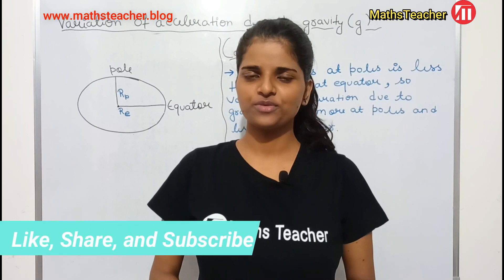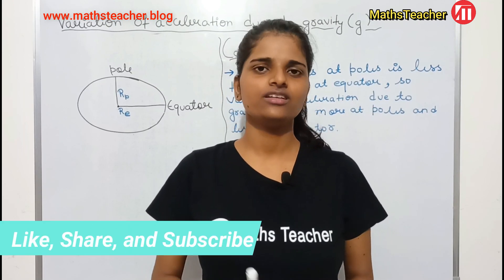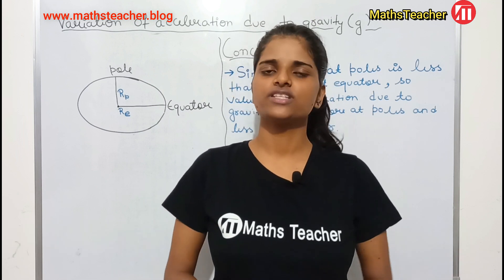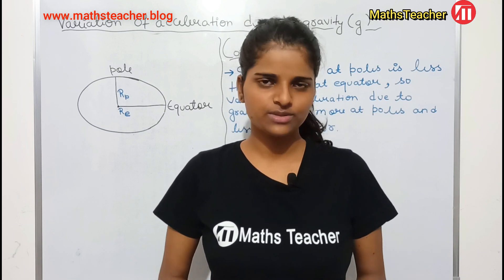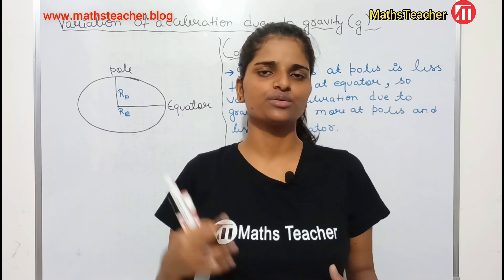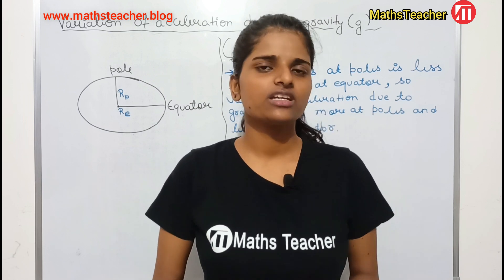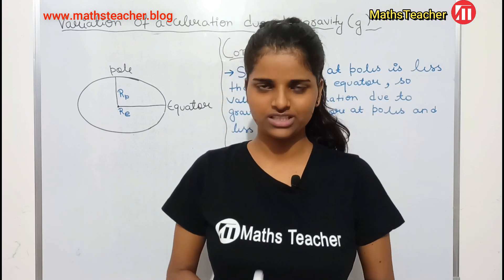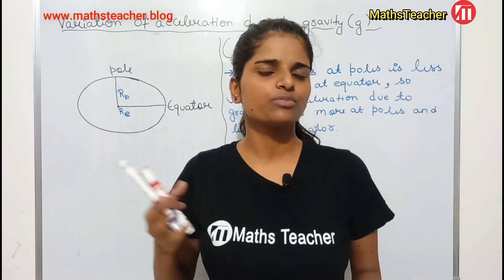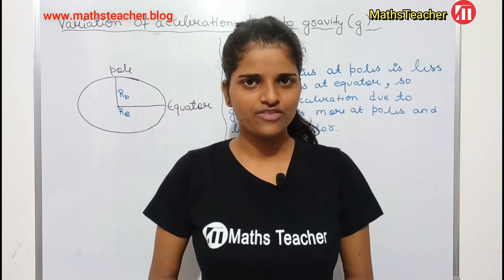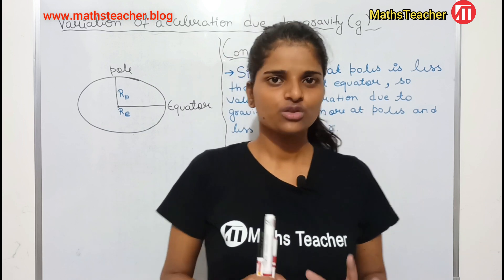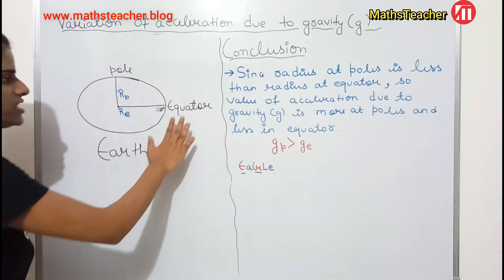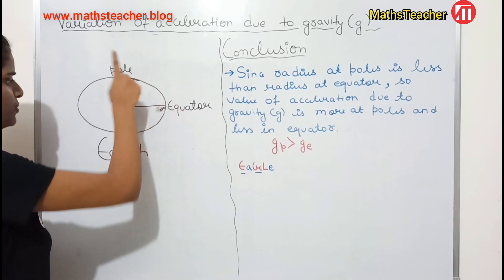Hello everyone, myself Bubbly and I welcome you all to Mass Teacher YouTube channel. In this video we are going to study about the variation of the value of g at poles and equator. Our earth is divided into two parts: equator and poles — north and south poles. I have drawn a diagram of the earth showing the equator, the north pole, and the south pole.